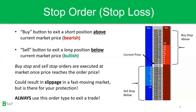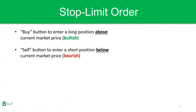Looking at the active ladder, the current price is highlighted in white. If we were short, we would place a buy stop order above the current market price, and if we were long, we would place a sell stop below the current market price.